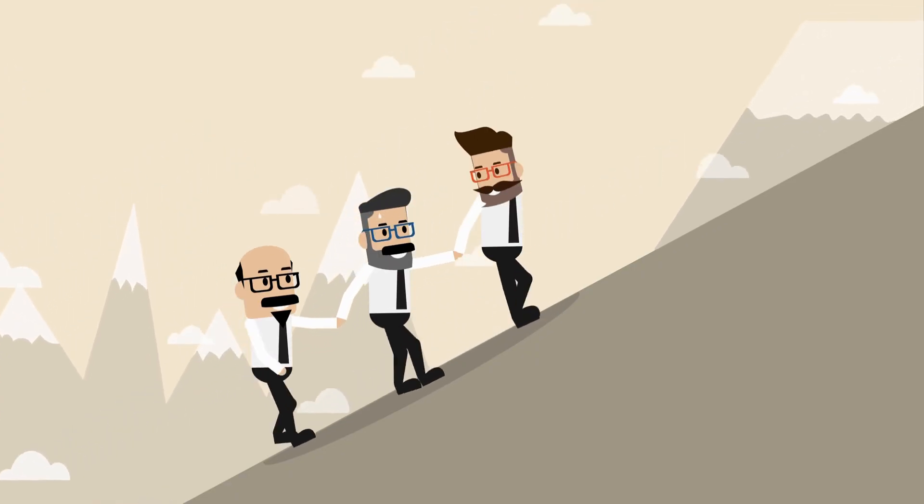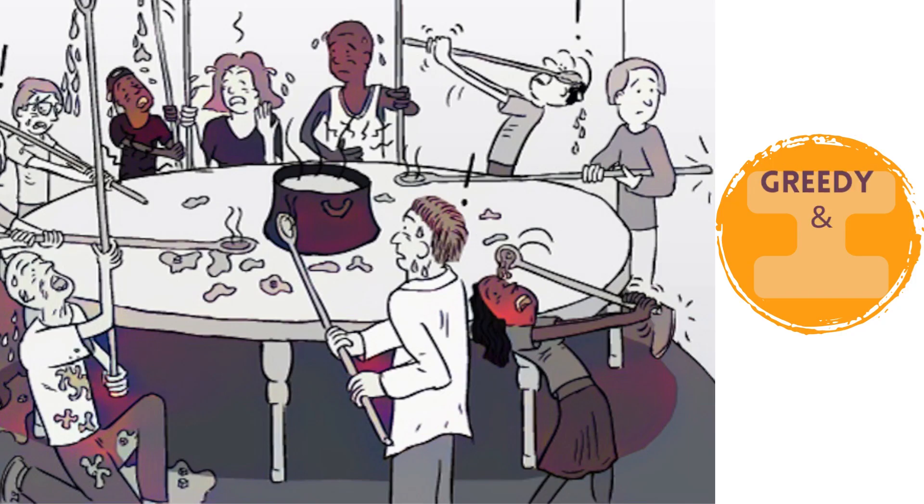In the first room, the people are unable to feed themselves because they are too focused on their own needs. They are greedy and selfish, and they refuse to help each other. As a result, they suffer and starve.